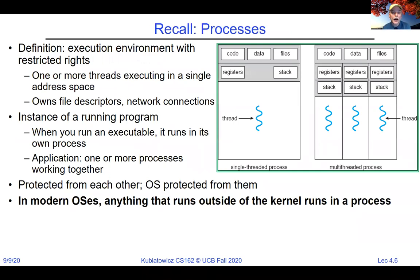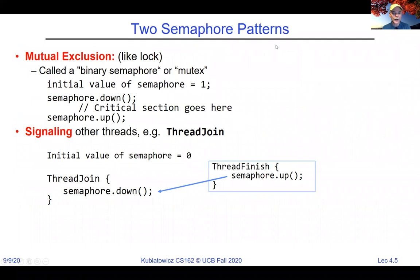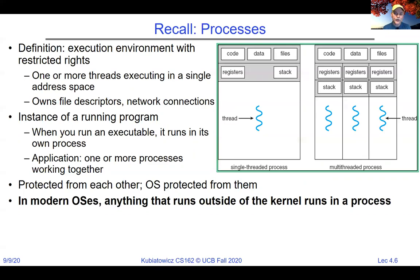A process has a protected address space and state, such as open file descriptors, and one or more threads. For every thread, each thread has a stack and a thread control block for saving its registers. Pretty much anything that runs outside of the kernel these days runs in a process of some sort. Threads share the heap but each has their own stack — if you shared a stack, you wouldn't have a clean execution.